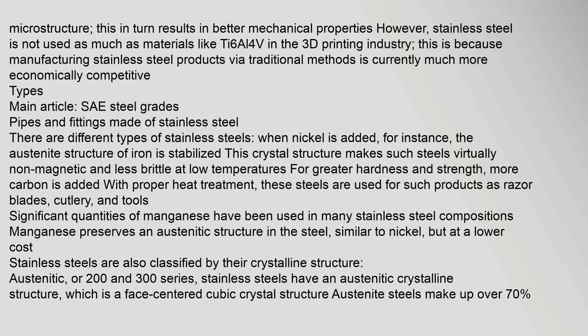The microstructure of stainless steel results in better mechanical properties. However, stainless steel is not used as much as materials like Ti-6Al-4V in the 3D printing industry, because manufacturing stainless steel products via traditional methods is currently much more economically competitive.